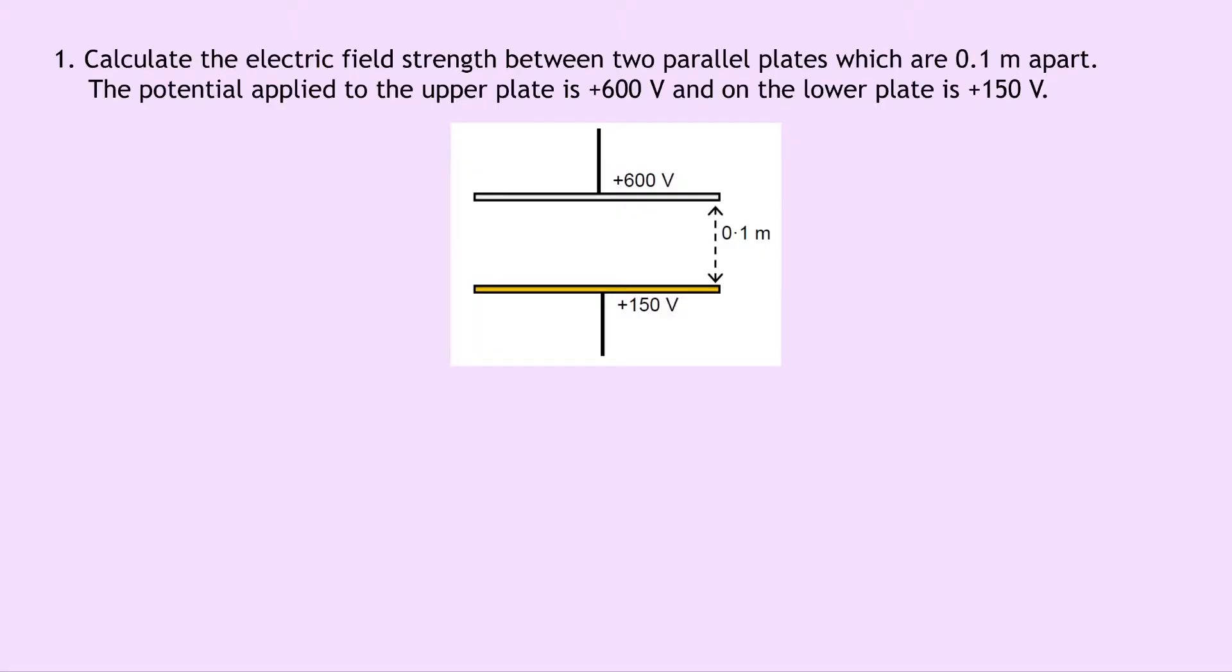Question one says to calculate the electric field strength between two parallel plates which are 0.1 metres apart. The potential applied to the upper plate is 600 volts, and on the lower plate is 150 volts. So we're simply trying to find the electric field strength E here. We know that the potential in this case is not going to be as simple as just 600 because it's actually the difference.